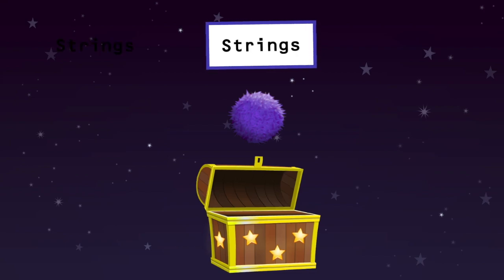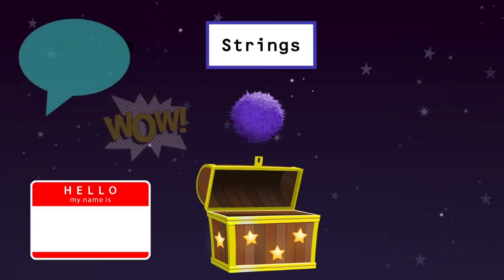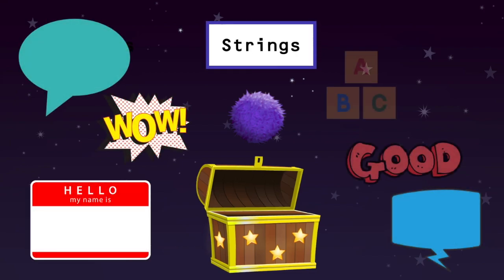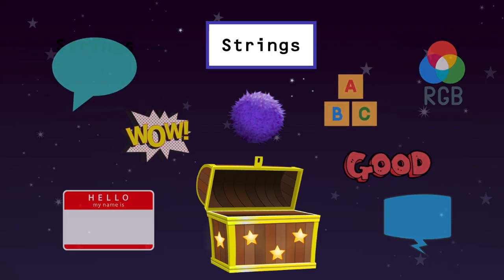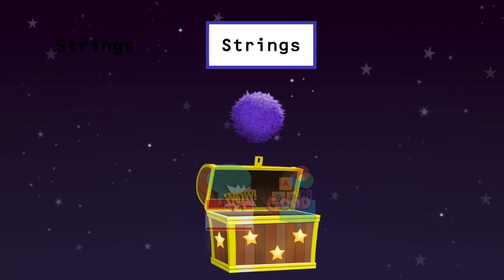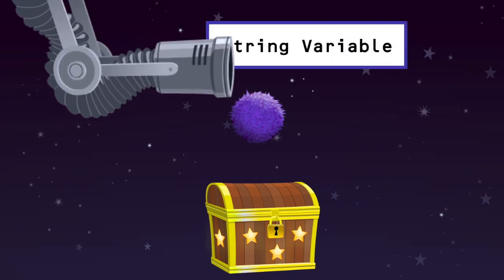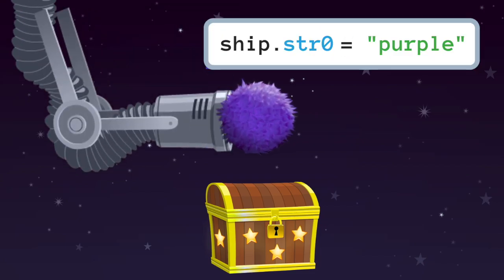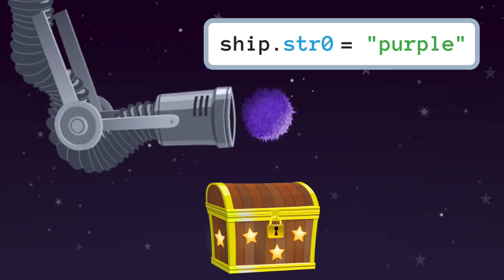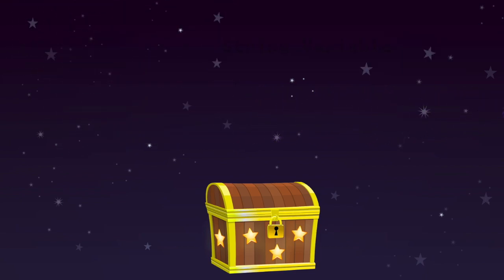Strings are everywhere in games, from names, to instructions, to colors — anything described with letters. If a variable is assigned a string value, we can label it a string variable. In Codable, we use colored fuzzballs to represent string variables.